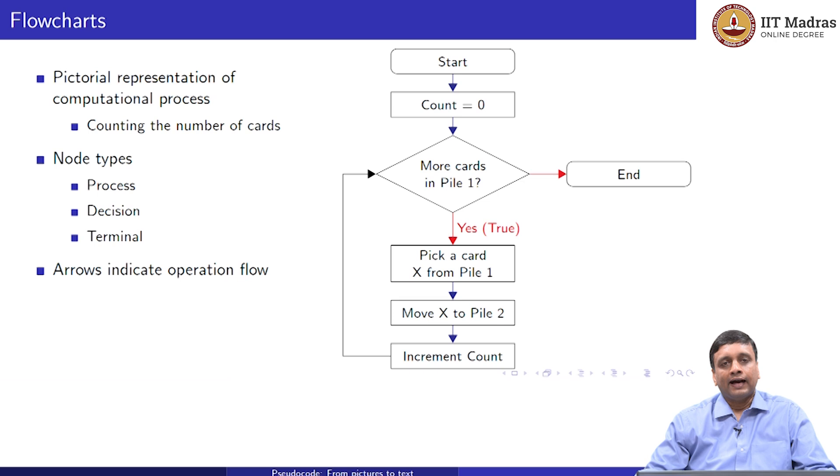And finally, the arrows actually tell us how to go from one step to another. So, in most cases, each step follows the next one. However, when we have these decision boxes, for instance, depending on the outcome of the decision, we might go one way or another. Here, for yes, we go down, and for no, we go to the right.